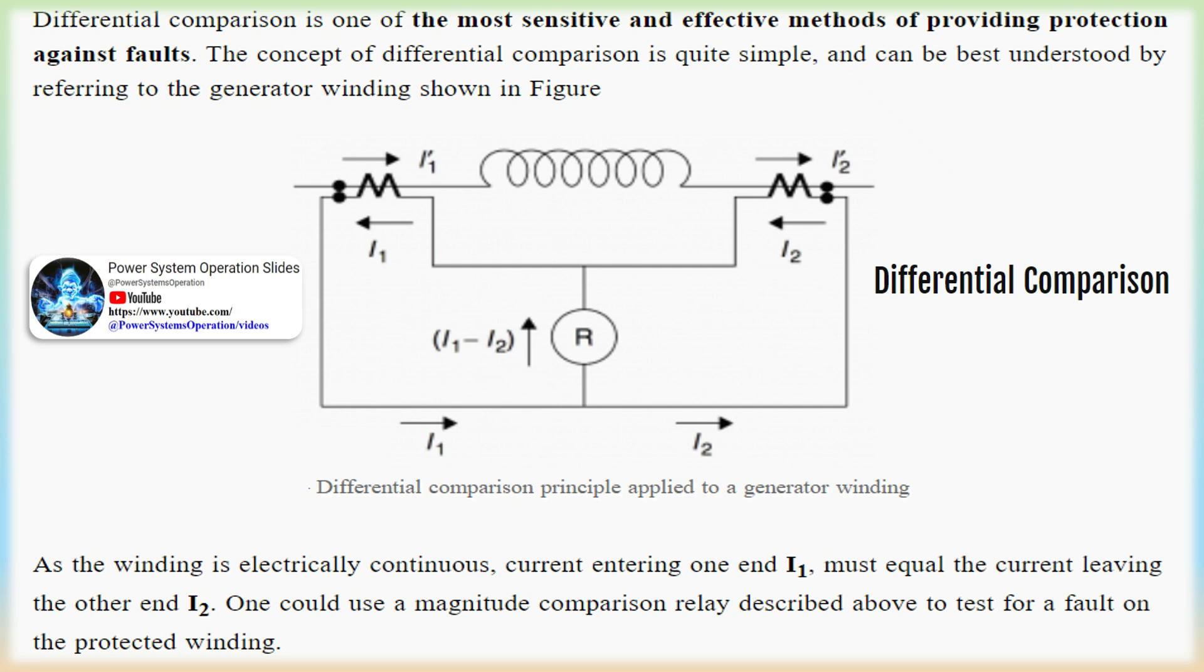Differential comparison. Differential comparison is one of the most sensitive and effective methods of providing protection against faults. The concept of differential comparison is quite simple, and can be best understood by referring to the generator winding shown in figure. As the winding is electrically continuous, current entering one end, I1, must equal the current leaving the other end, I2.